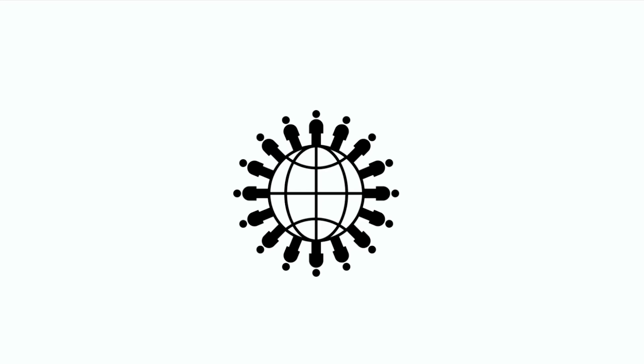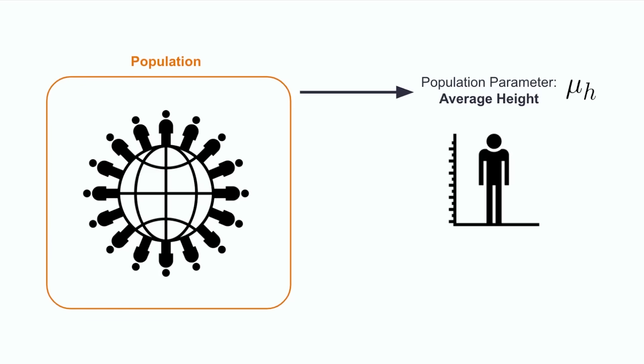Now, it might be a bold claim, but the world is a big place with a lot of people in it. Statisticians often find themselves wanting to describe groups at the scale of an entire population, which comes with some challenges. For example, perhaps someone wants to describe the average height of the entire population of Earth.